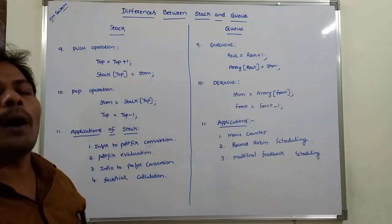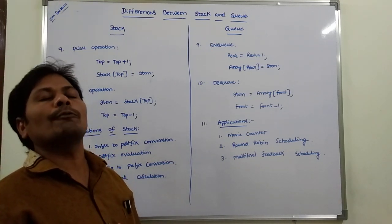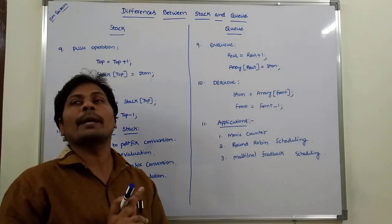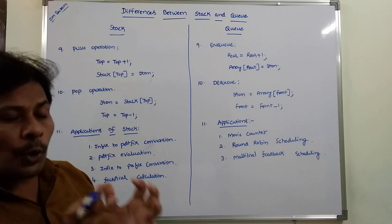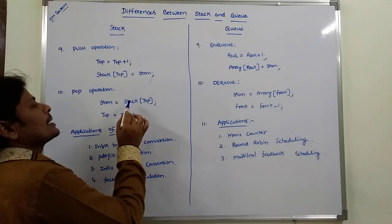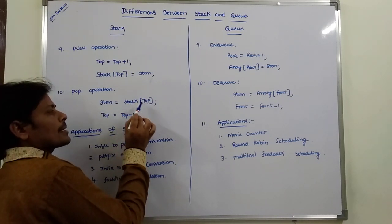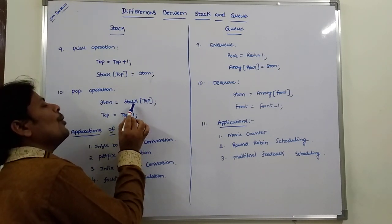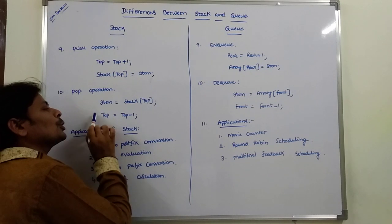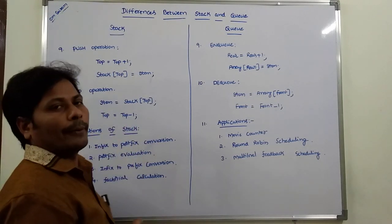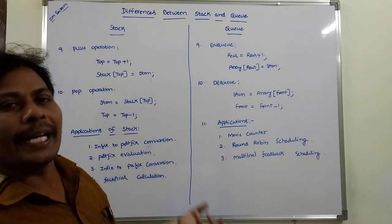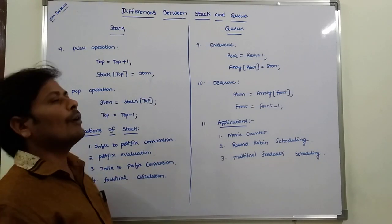Pop operation is used for removing one element from the stack. We remove the element at the top: stack[top]. First, remove the item from the top of the stack, then decrement the top. Once an element is deleted from the stack, we have to decrement the pointer top.